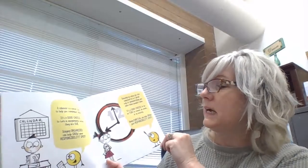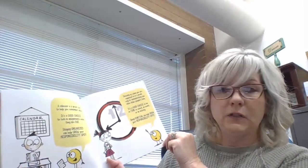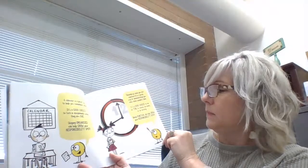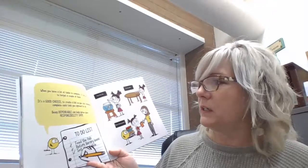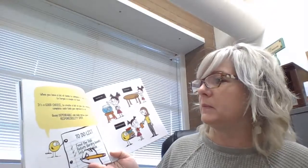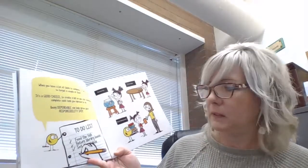Showing up when you are supposed to is a great way of demonstrating you value people's time. It's a good choice to be on time to school, an event, or an activity. Being punctual can help grow your responsibility spot. You have a lot of tasks to complete. It can be easy to forget a couple of them. It's a good choice to create a list so you can remember to complete each task you agreed to do. Being dependable can also grow your responsibility spot.